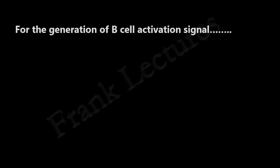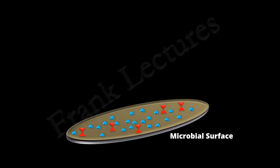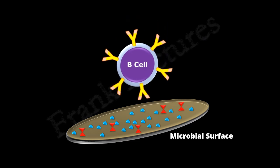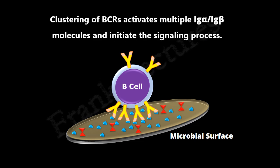Another important requirement for B cell activation is that multiple B cell receptors must be brought close together on the surface of the B cell. An antigen or pathogen generally has multiple copies of the same epitope on its surface, and each epitope can bind adjacent B cell receptors on one B cell. Once bound, the surface B cell receptors begin to cluster. This process activates the accessory proteins Ig-alpha and Ig-beta and initiates the signaling process.